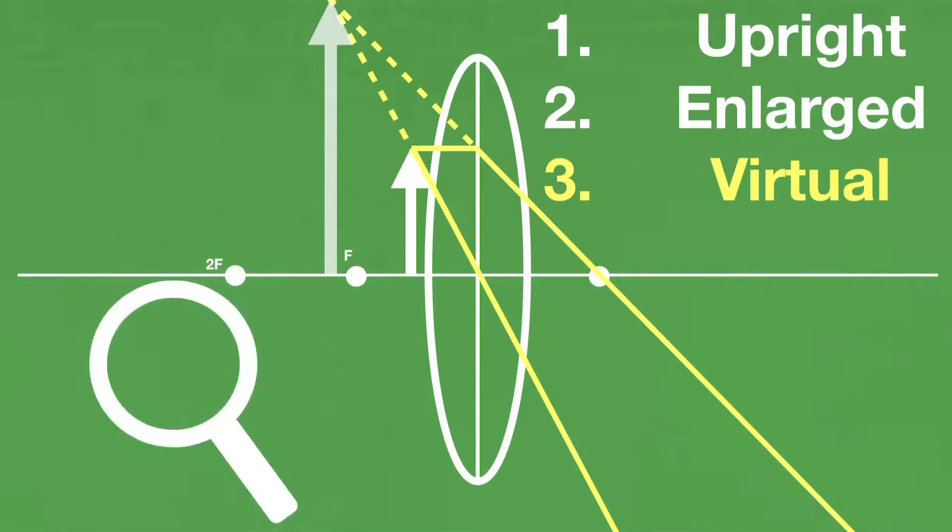To illustrate what I mean by this, let's imagine an eye here. Then, when it's looked through the lens, our brain would think that the rays converge behind the object. And so, what we would see is the larger virtual image, and not the object.